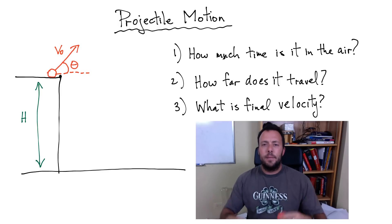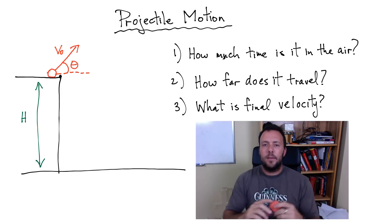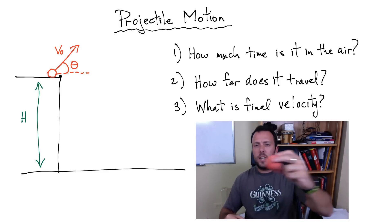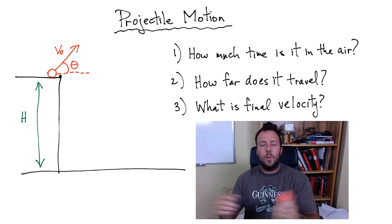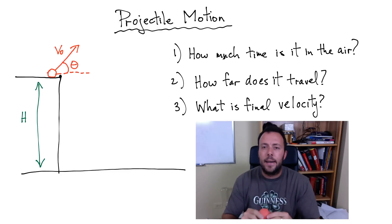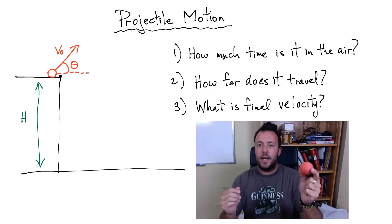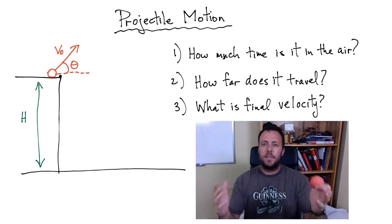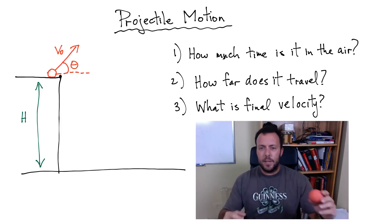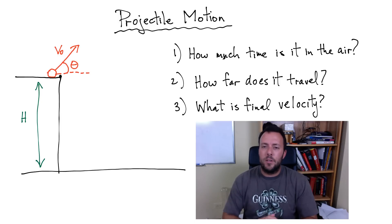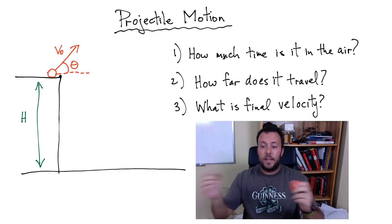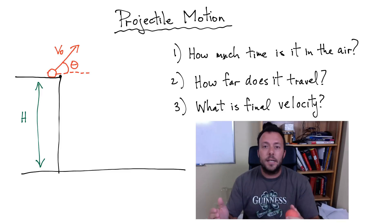Hi everyone, PhysicsNinja here. In the previous problem, I looked at a projectile that was launched horizontally, and I calculated how long it was in the air, how far it went, and its speed right before impact. I now want to consider the same projectile — the same cliff and the same setup — except this time I'm going to launch it at an angle. So let's calculate the same parameters: how much time is it in the air, how far does it go, what's the distance from the cliff, and what's its final velocity.